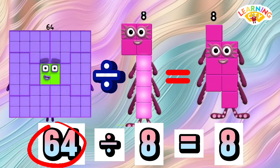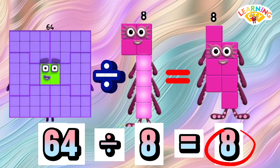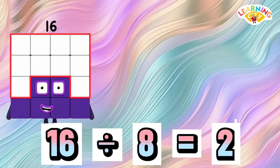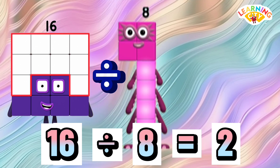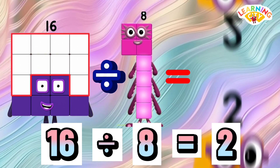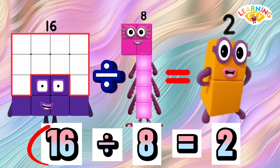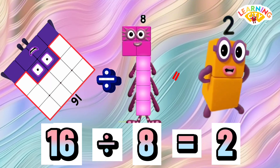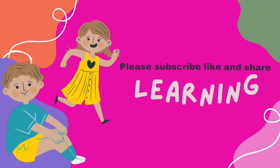Let's repeat: 64, 8, 8. 16 divided by 8 is equals to 2. Let's repeat: 16, 8, 2.